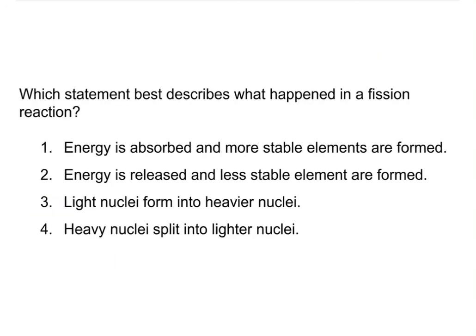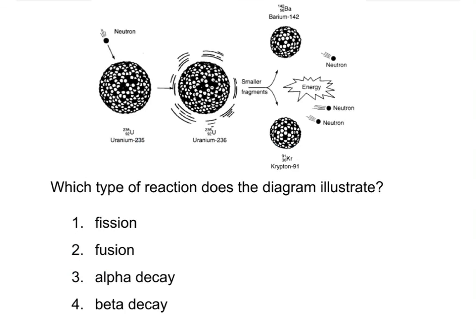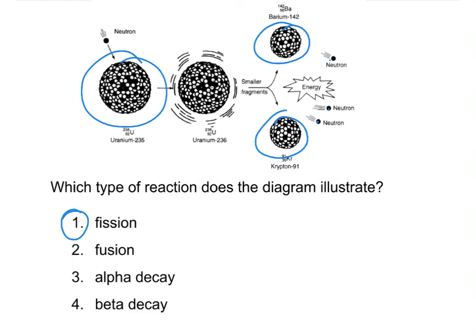Which statement best describes what happens in a fission reaction? Answer number four is the correct answer: heavy nuclei splits into two lighter nuclei. Don't get tricked by answer number two — while it correctly states that energy is released, the second half says "less stable elements are formed," which is incorrect for fission. The split of uranium or another large atom in fission actually forms more stable atoms and releases energy in the process. Which type of reaction does the diagram illustrate? It's clearly fission — a huge atom splits into two smaller ones and a few neutrons are released. Big one splits into two smaller ones; energy is released.